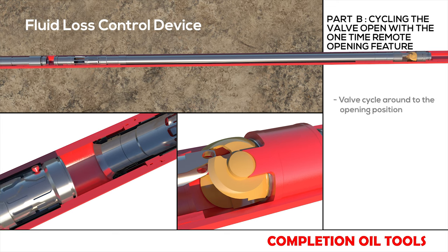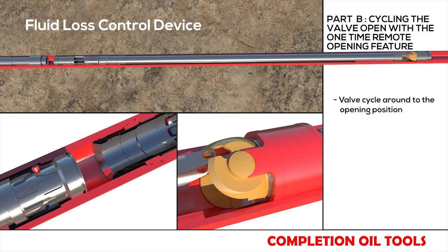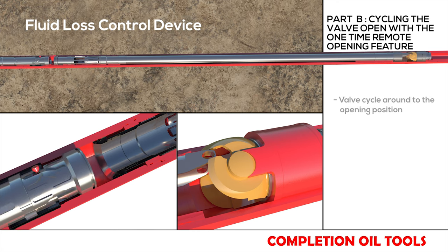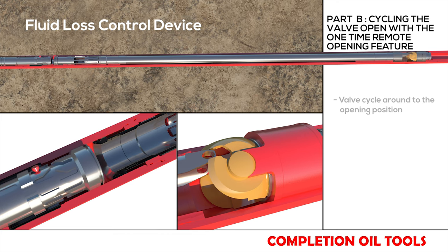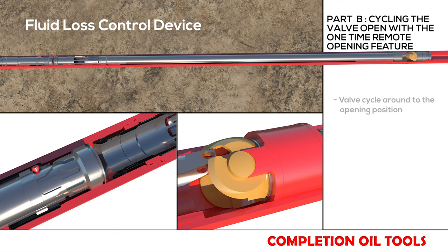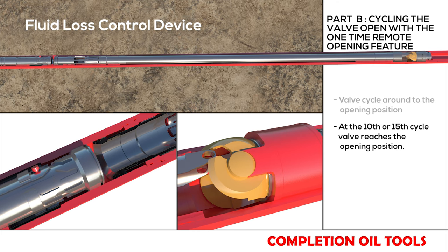Cycling the valve open with the one-time remote opening feature: the valve cycles around to the opening position. At the 10th or 15th cycle, the valve reaches the opening position.